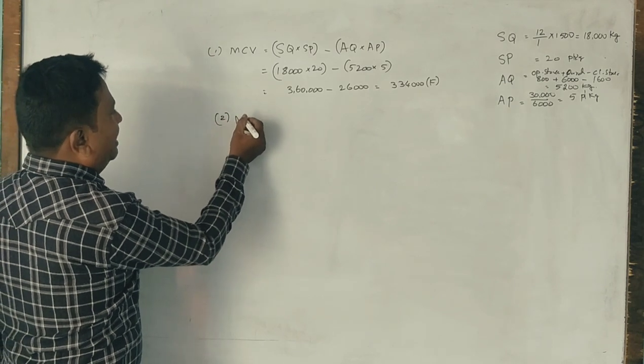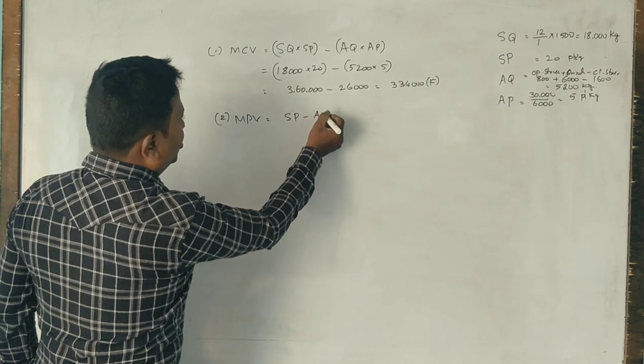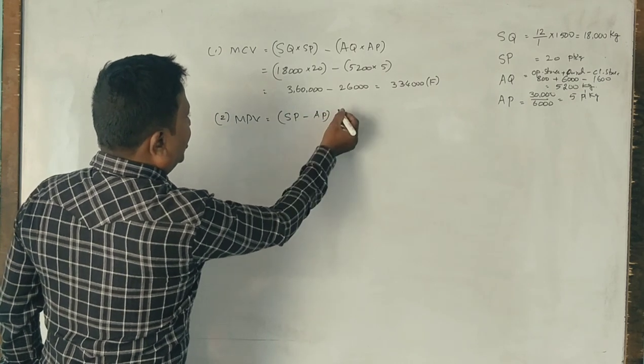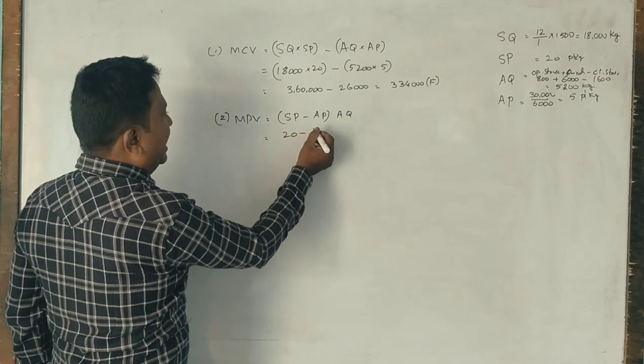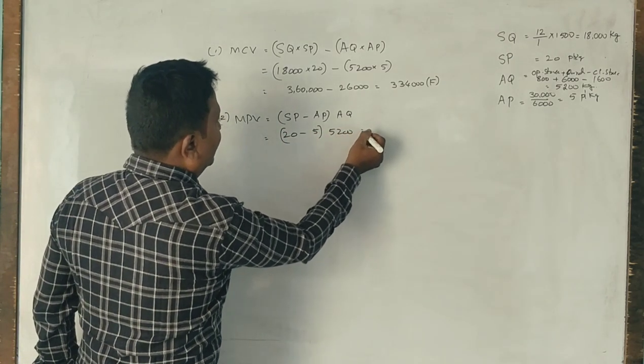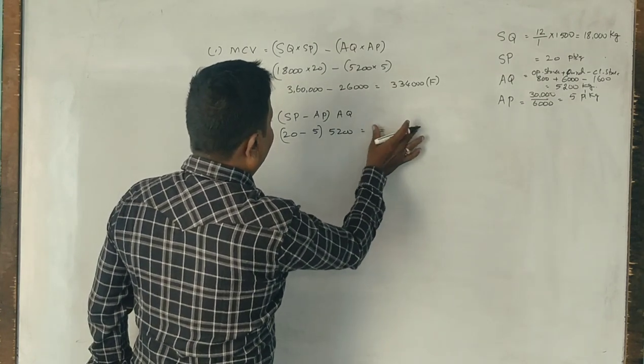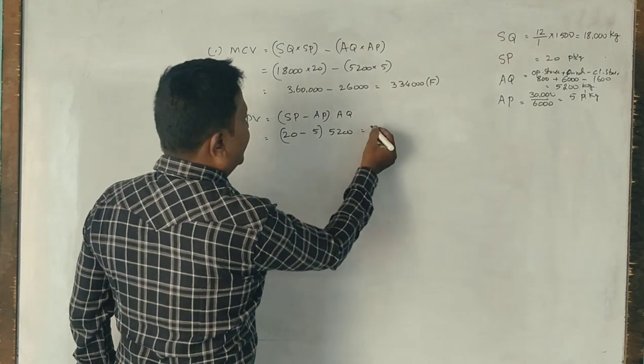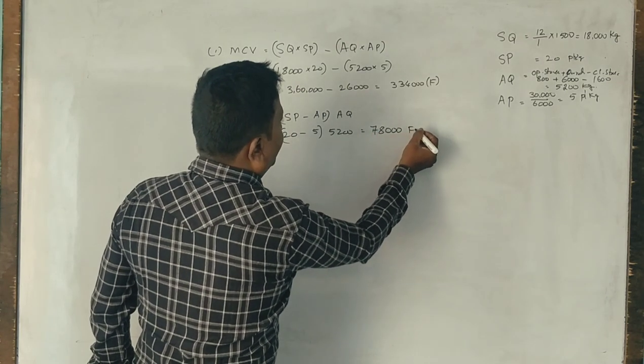Next, material price variance: standard price minus actual price into actual quantity. Standard price is 20, actual is 5, and actual quantity is 5,250. So 15 into this is 78,000 favorable.